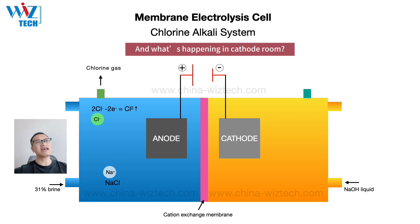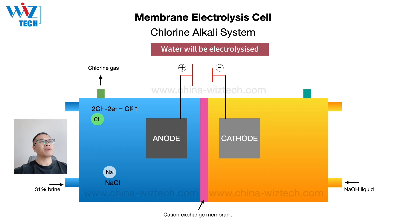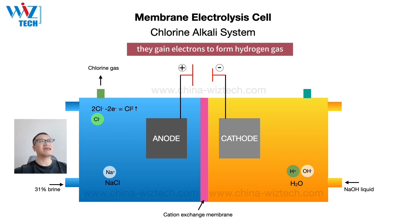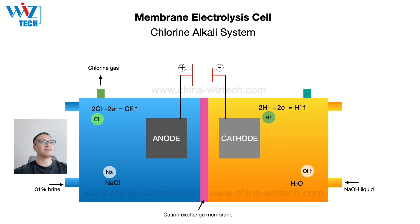What's happening in the cathode room? Water will be electrolyzed, so we get hydrogen ions and hydroxide ions. Hydrogen ions are attracted towards the cathode, where they gain electrons to form hydrogen gas.